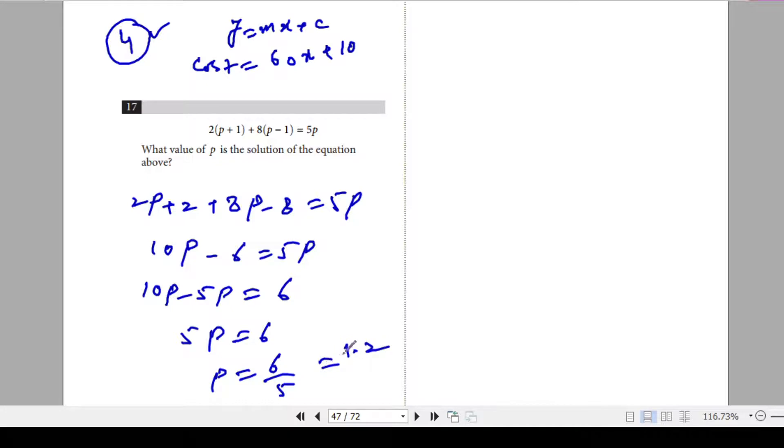Either way it's fine. Whether you write 6 over 5 or you write 1.2, it's fine. You have to fill in the grid. So that's the answer.